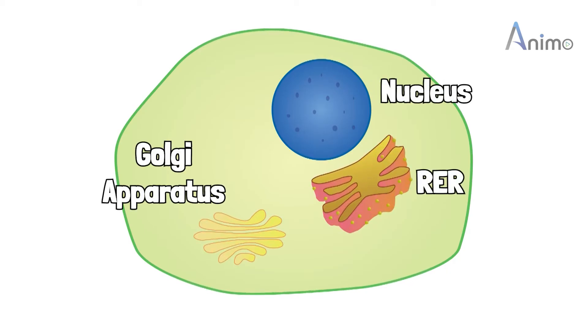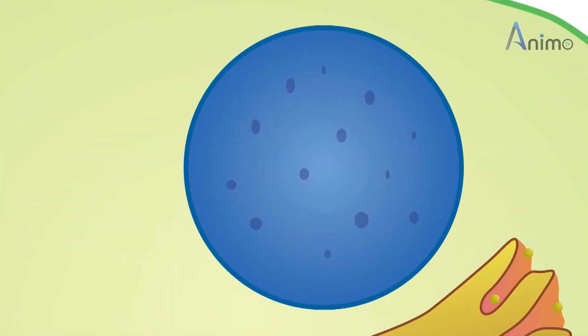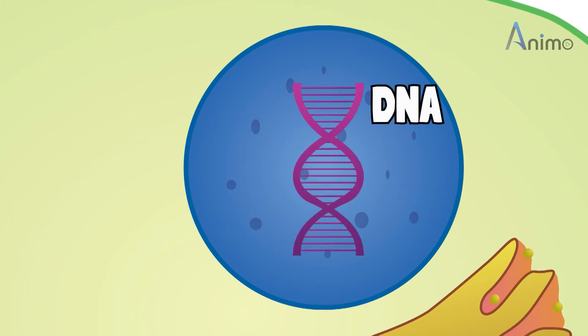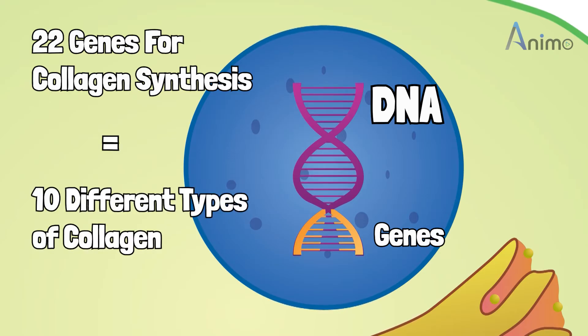It all starts from here: the nucleus has DNA, and DNA has thousands of genes. In these thousands of genes, 22 genes are for collagen production, and these 22 genes make 10 different collagen precursor proteins.